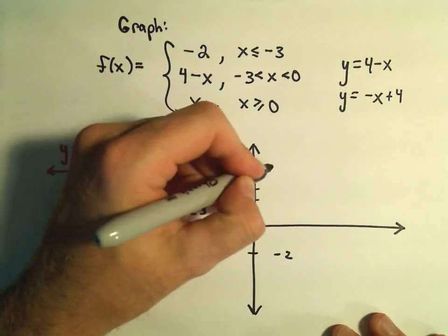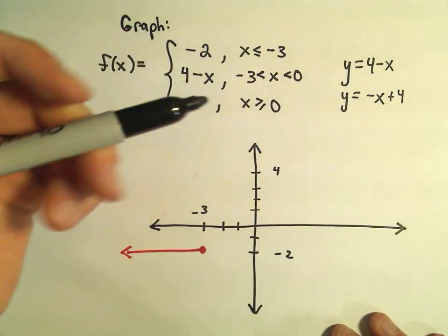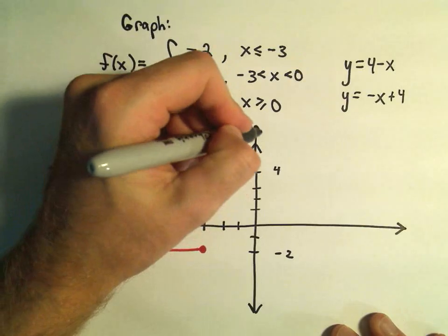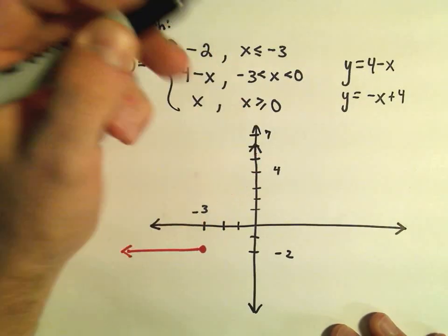So 1, 2, 3, 4. And a slope of negative 1. So I know it's pointing downwards. Let me give myself a little more room here. 5, 6, we'll say 7's up here.